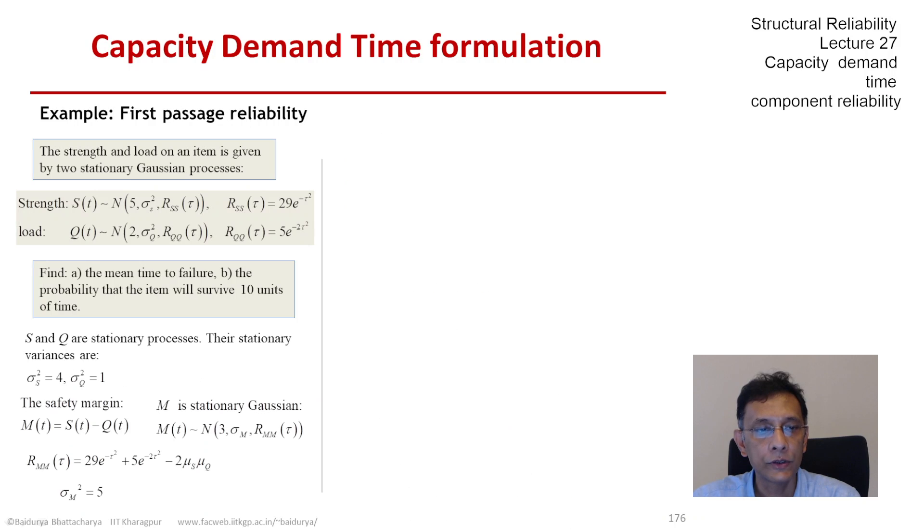Now let us move on. On the left I have written whatever we have derived so far. Now let us take a look at the derivative process, because for the first passage probability we would need the standard deviation of the derivative process.